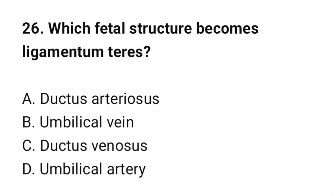Question number 26. Which fetal structure becomes the ligamentum teres? The correct option is B: umbilical vein.